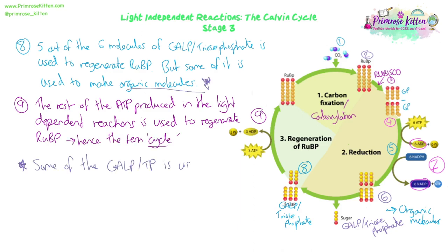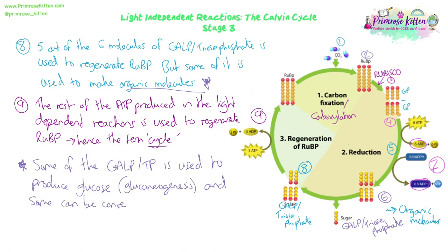Some of the GALP or triose phosphate is used to make biological molecules. Some is used to produce glucose in a process called gluconeogenesis. Once made into glucose, some can be converted into sucrose for transport, starch for storage, or cellulose for cell walls. But not all of the GALP is converted into glucose - some is used to make lipids, amino acids, and nucleic acids by combining it with nitrogen and other elements. It's an organic molecule used to make all the organic molecules the plant needs for life.